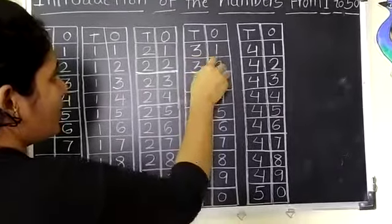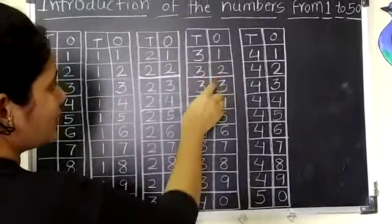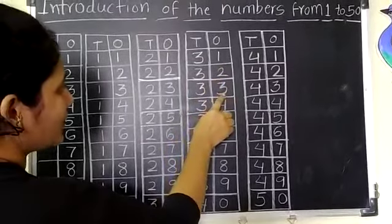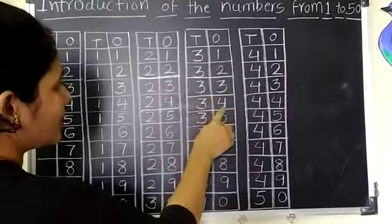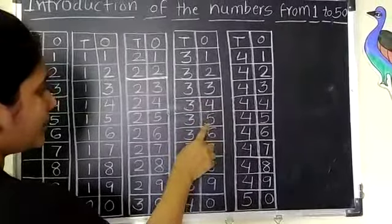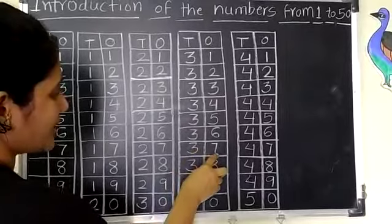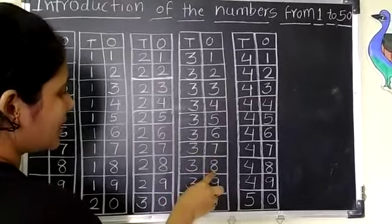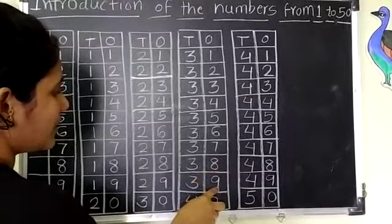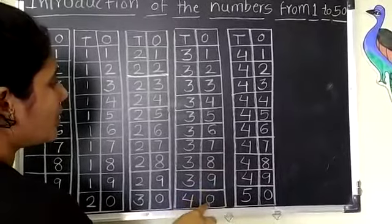3, 1, 31. 3, 2, 32. 3, 3, 33. 3, 4, 34. 3, 5, 35. 3, 6, 36. 3, 7, 37. 3, 8, 38. 3, 9, 39. 4, 0, 40.